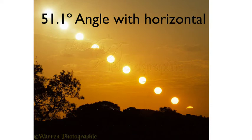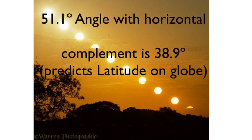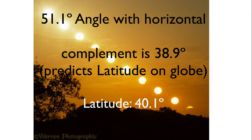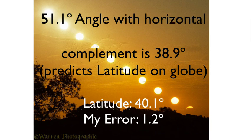I draw a line through that and it's a 51.1 degree angle with horizontal. What math can we do with 51.1 degrees? Well, the complement is 38.9 degrees, and this is supposed to predict my latitude. My latitude at this location was 40.1 degrees, which means my error was 1.2 degrees. So I ended up with fairly decent results even though my data gathering was pretty horrible.